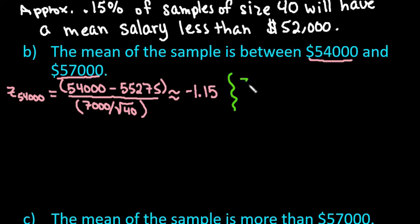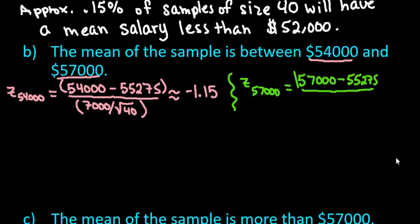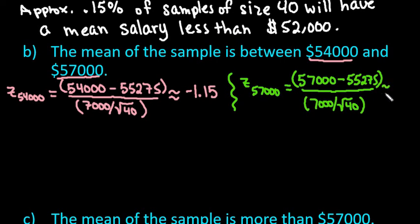We also have to find the z-score for $57,000. Our x-bar is now $57,000, minus $55,275, divided by $7,000 over the square root of 40. When I plug this in, it gives me approximately 1.56 — it was actually 1.558, but rounded to two decimal places.